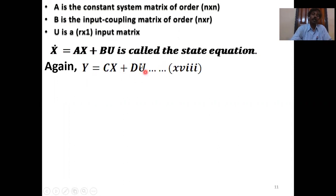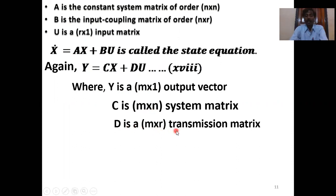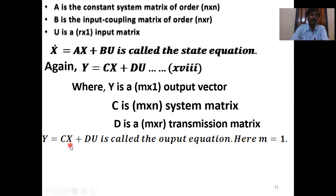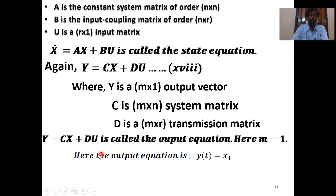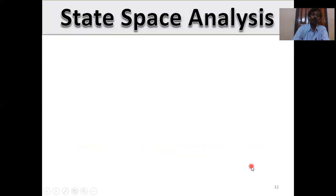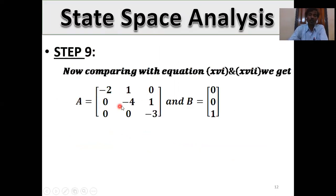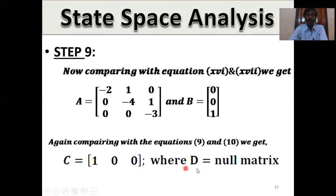The output equation y = Cx + Du: C is the m×n system matrix, D is the m×r transmission matrix. Here m = 1, so y(t) = x1, meaning C = [1, 0, 0] and D = null matrix (zero). Comparing: A = [−2, 1, 0; 0, −4, 1; 0, 0, −3], B = [0; 0; 1], C = [1, 0, 0], D = 0. These matrices are used for stability, controllability, observability, and transfer function calculations.